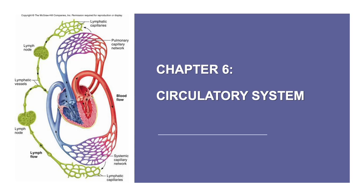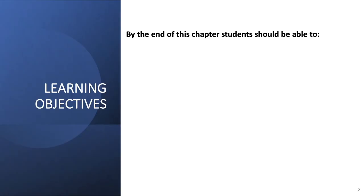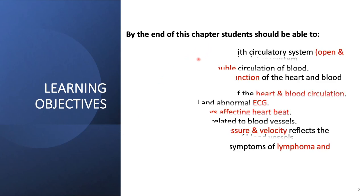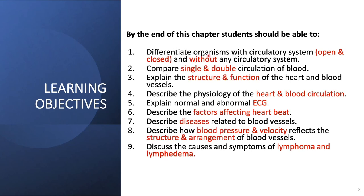Welcome back to our channel. We are going to proceed with Chapter 6: Circulatory System. Here are the learning objectives for Chapter 6. By the end of this chapter, students should be able to differentiate organisms with a circulatory system and without any circulatory system. The circulatory system can be divided into two main types: open and closed circulatory system.